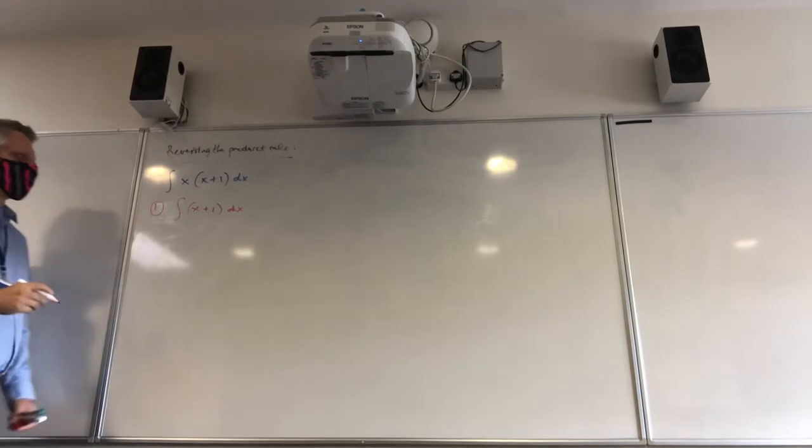I just want to start by taking the first one and integrating it. The x plus one. So leave the x for now, we're just going to go with the x plus one. And if we integrate that, we will end up with a half x squared plus x. That's the integral of x plus one dx.